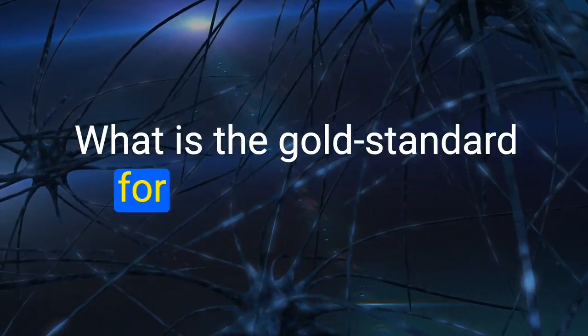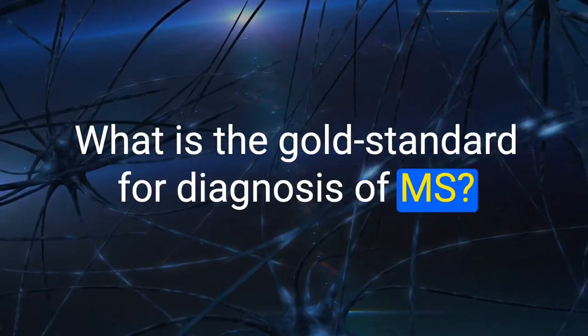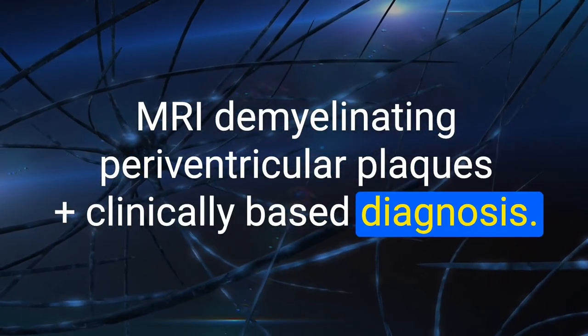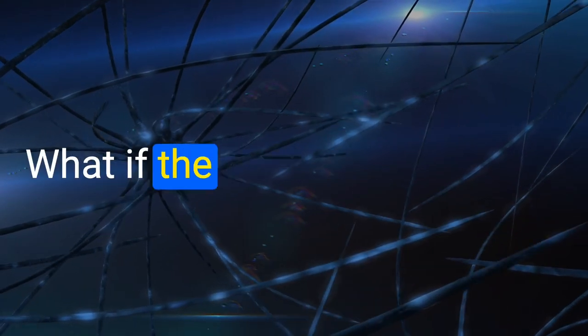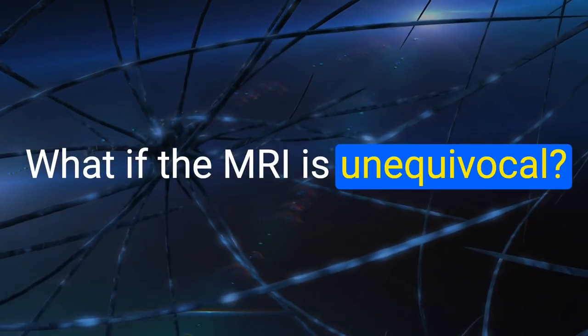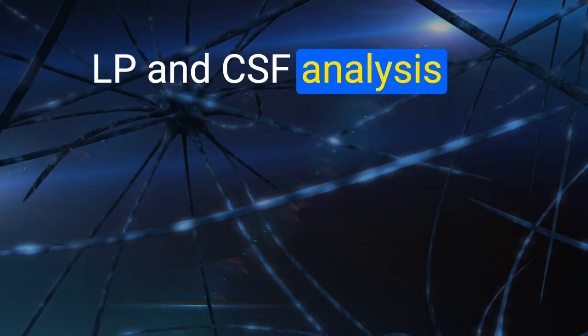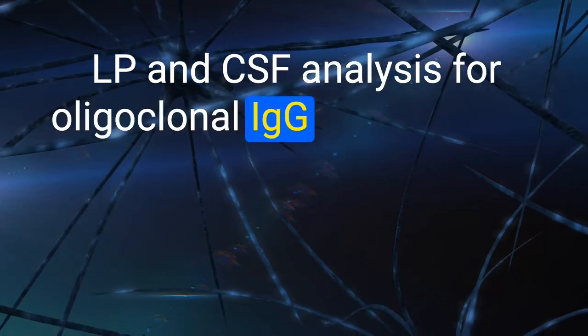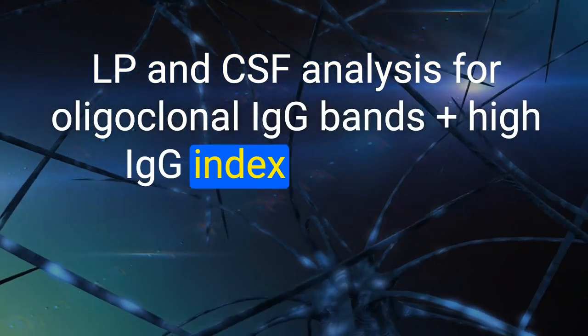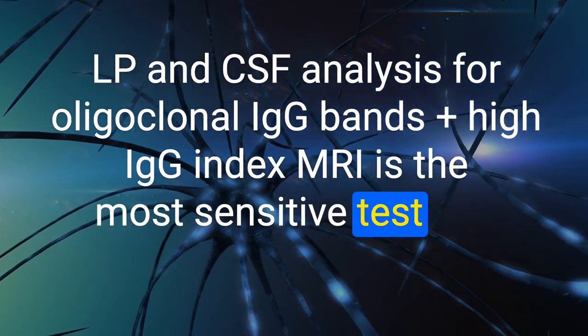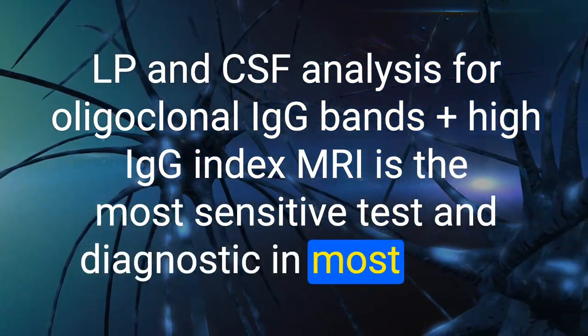32. What is the gold standard for diagnosis of MS? MRI showing demyelinating periventricular plaques plus a clinically based diagnosis. If MRI is equivocal, perform LP and CSF analysis for oligoclonal IgG bands plus high IgG index. MRI is the most sensitive test and diagnostic in most cases.